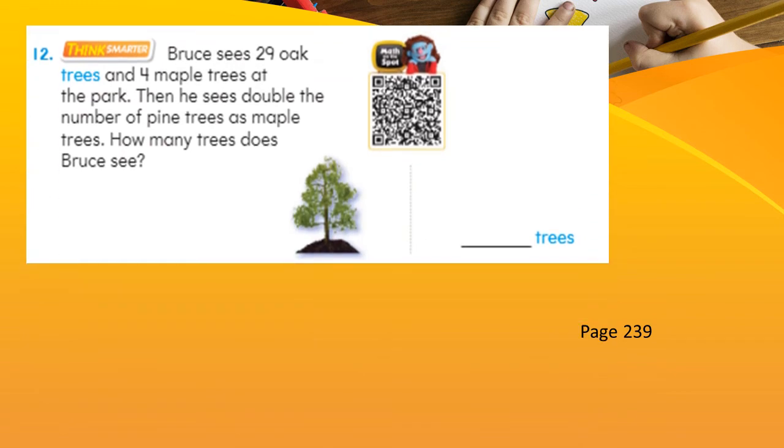On the same number, which is page 239, we have a Think Smarter question. Let's read. Bruce sees 29 oak trees and 4 maple trees at the park. Then he sees double the number of pine trees as maple trees. How many trees does Bruce see? Now children, I always tell you, don't try to solve all at once. Let's break the problem into smaller parts. What is the first part telling you? That Bruce sees 29 oak trees and 4 maple trees. So in the beginning, let's find out how much is 29 plus 4?